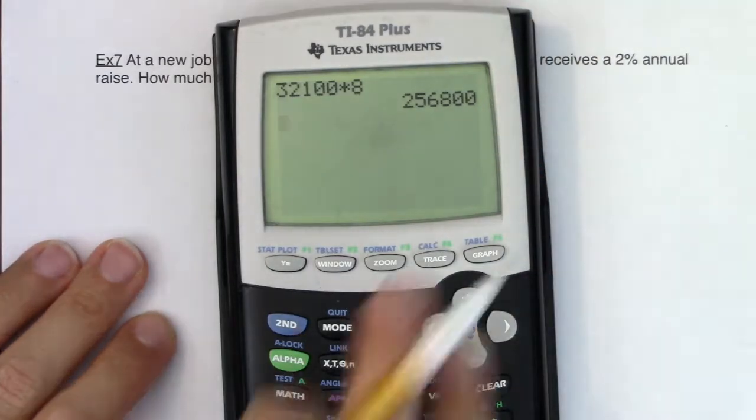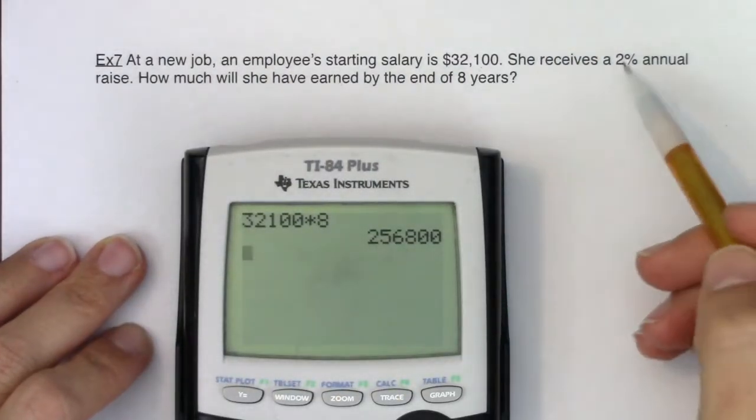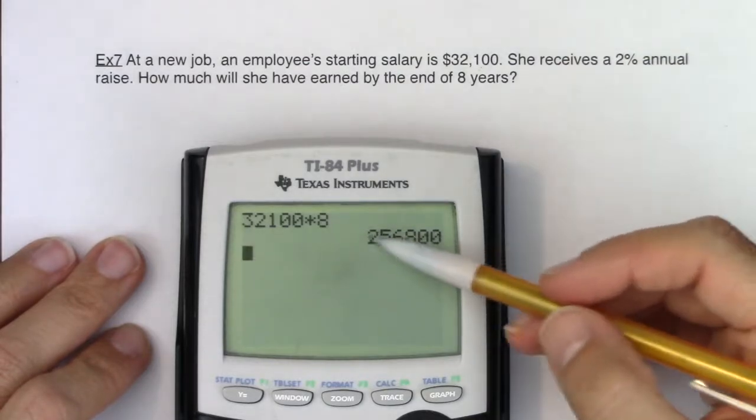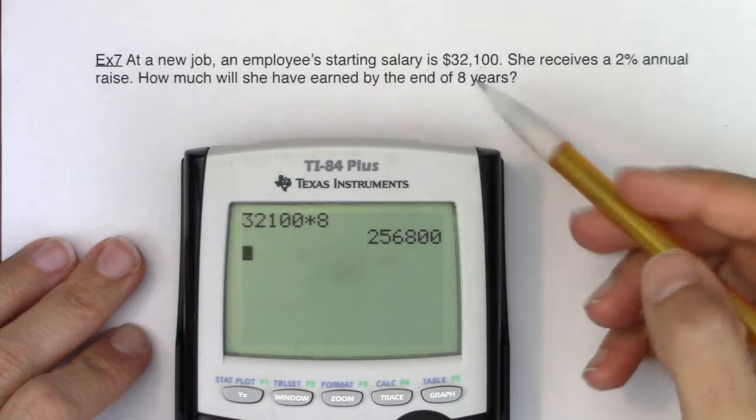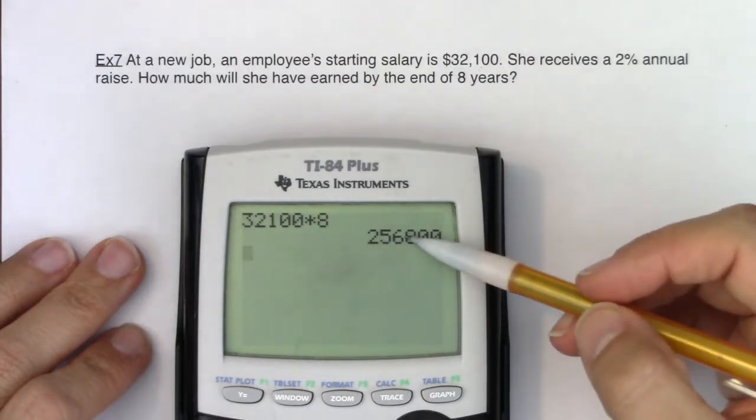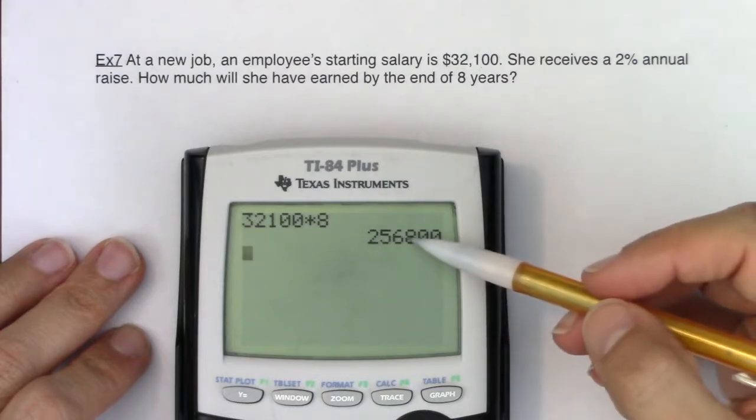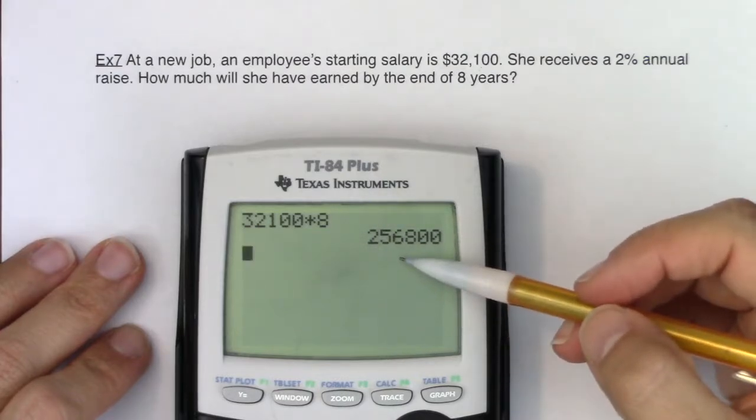So you can imagine for this scenario, for this employee, since she is getting a 2% raise, I expect that when I find the sum of how much she's made at the end of the eight years, it'll be a little bit larger than $256,800. Maybe it'll be $260,000, $270,000, $280,000, but somewhere in that ballpark.